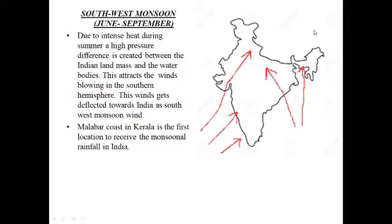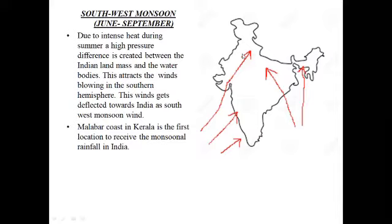By the end of May, differential heating of land and sea brings about a seasonal low pressure area in the region from the Thar Desert to the Chotanagpur Plateau region. As a result, a high pressure gradient builds up between hot north India with intense low pressure and the cooler surrounding water bodies with high pressure.